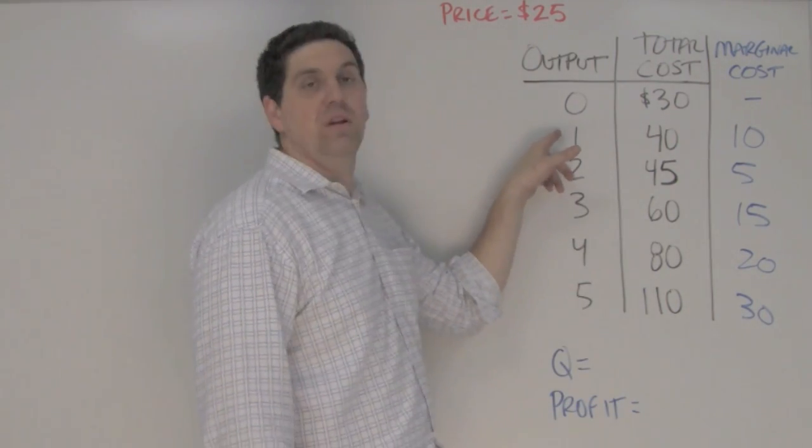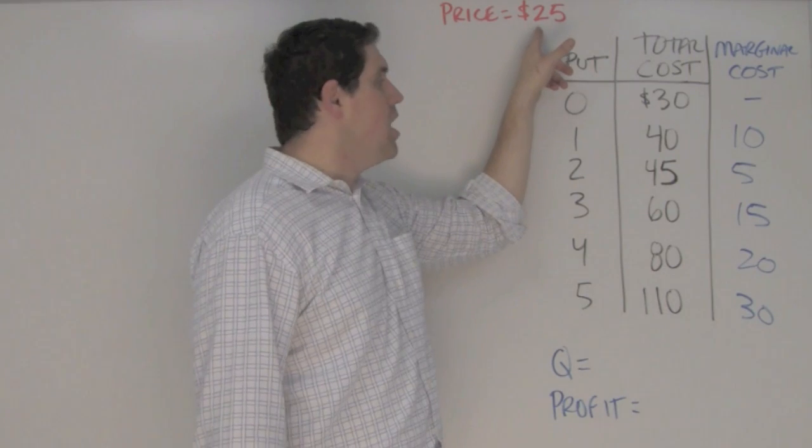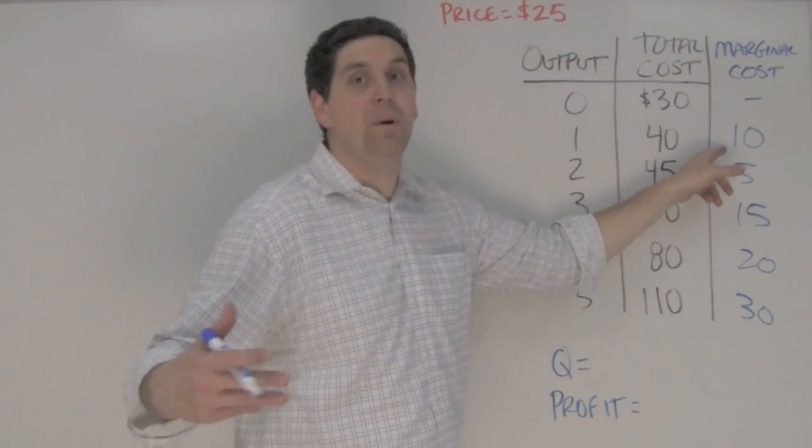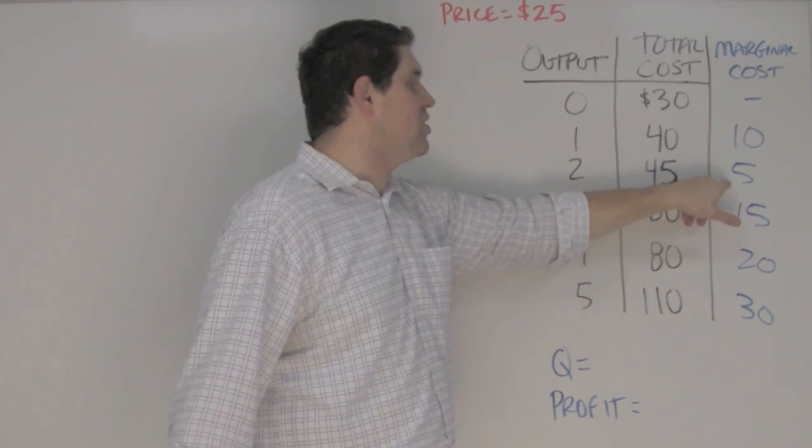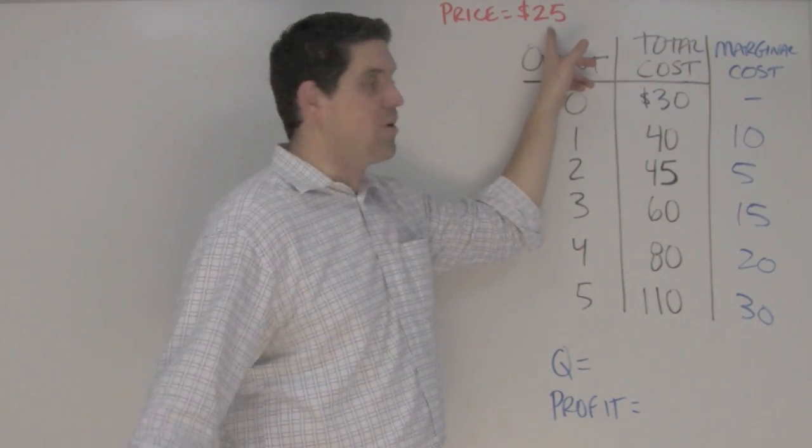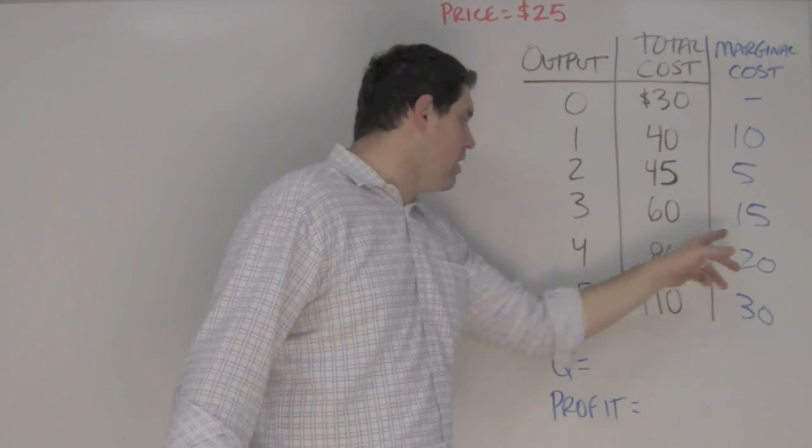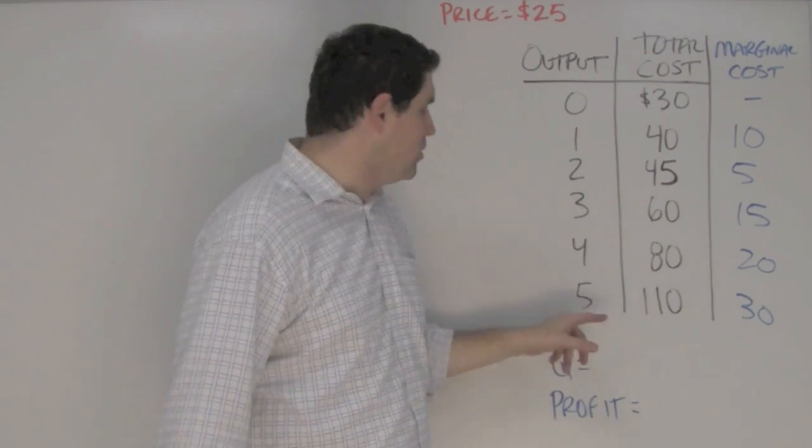So if I can sell the very first unit for an additional $25 but the additional cost is $10, I'm gonna make profit on that and I'm gonna produce that unit. The second unit cost me additional $5, I can sell for $25, I'm gonna produce that. I'm gonna produce a third unit, I'm gonna produce a fourth unit, but I will not produce the fifth unit.